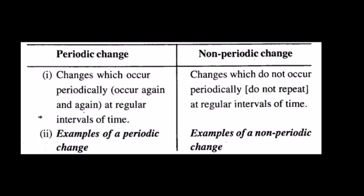Changes can also be periodic or non-periodic. Periodic changes are those which occur again and again after a definite interval of time. Non-periodic changes do not occur regularly — they do not recur after a fixed interval, and may take a long time to occur again. This is closely related to the concept of fast and slow changes.